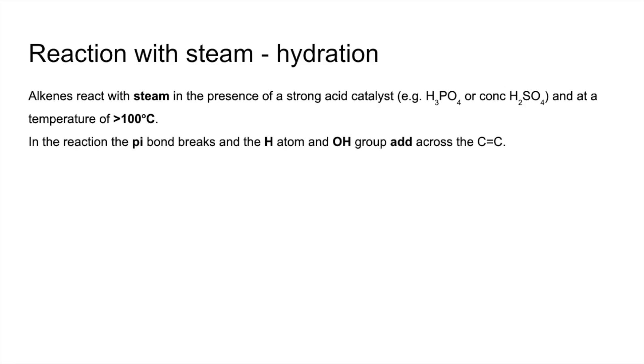And just as before, the pi bond breaks, and the hydrogen atom and the OH group from the steam add across the C=C double bond. That's where that AB trick comes in handy. And the product this time is an alcohol.